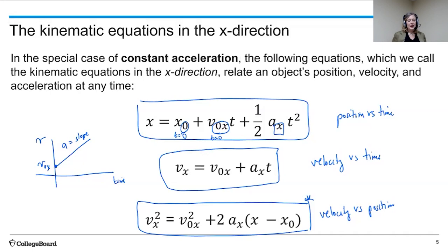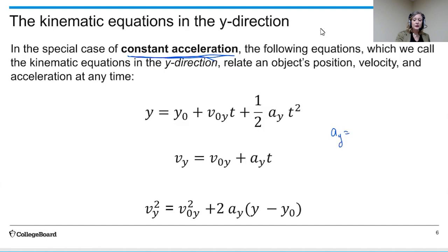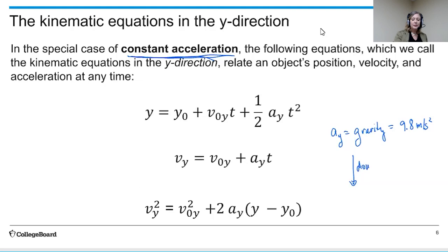These are the three kinematic equations in the x direction. You can write similarly three equations in the y direction by replacing the x's with y's, giving another set for constant acceleration in y. Often in the y direction the acceleration is due to gravity — 9.8 meters per second squared. If downward is positive, the acceleration is plus 9.8; if downward is negative, then g is minus 9.8 meters per second squared.